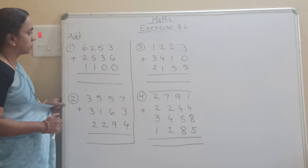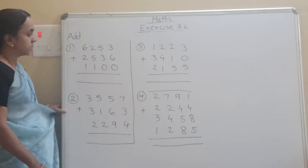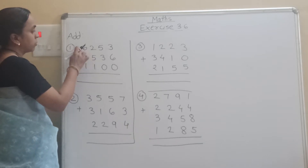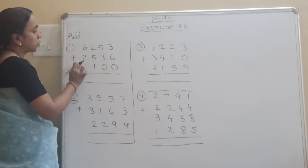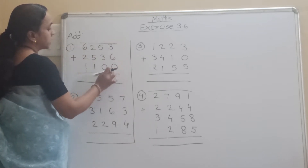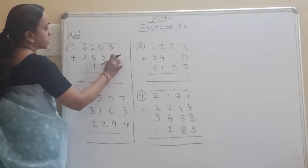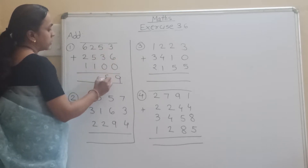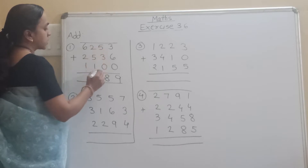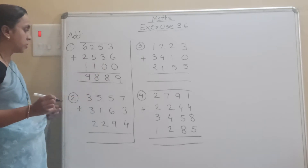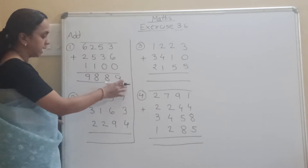Now we will see exercise 3.6 on page number 47. Here we have to do addition of more than 2 numbers, in the same way. Starting from ones: 6 plus 3 is 9, 9 plus 0 is 9, 5 plus 3 is 8, 8 plus 0 is 8, 5 plus 2 is 7, 7 plus 1 is 8, 6 plus 2 is 8, 8 plus 1 is 9. So the answer is 9889.